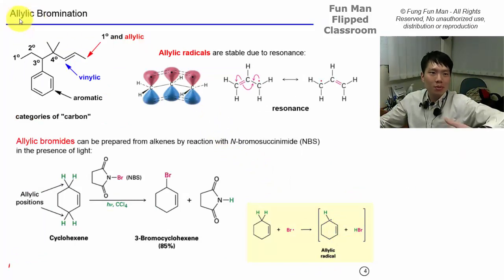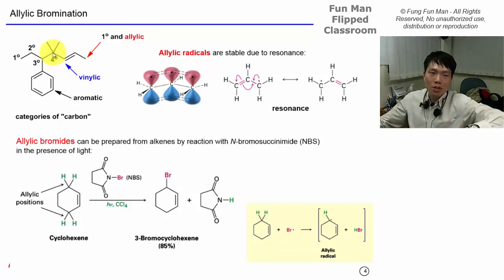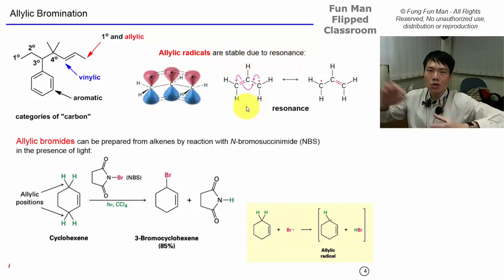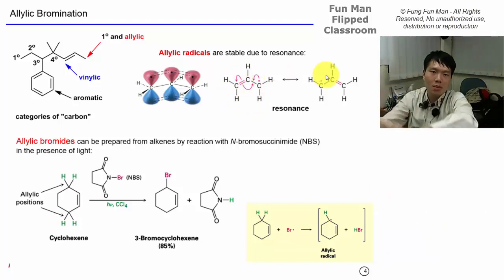Allylic bromination: for an alkene with a carbon–carbon double bond, the carbon adjacent to the double bond is called the allylic position. A primary carbon has one carbon attached; a secondary has two; tertiary has three; quaternary has zero hydrogens and is connected to four carbons. Allylic radicals are stable due to resonance — we can draw different resonance structures showing the delocalization of pi electrons throughout the molecule, spreading out the electron density, which lowers the system's energy and increases stability.